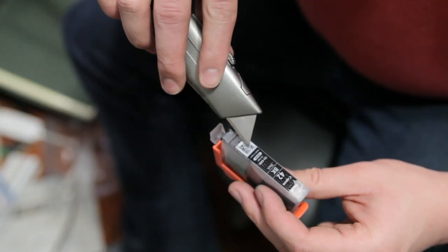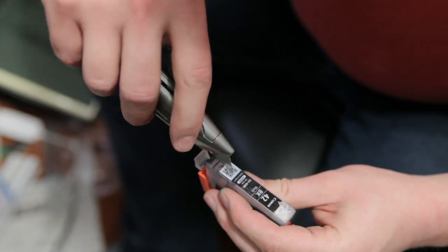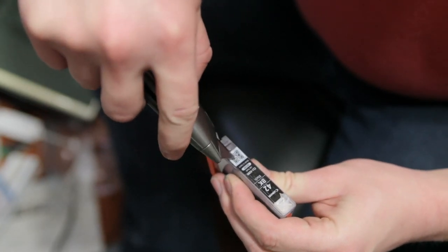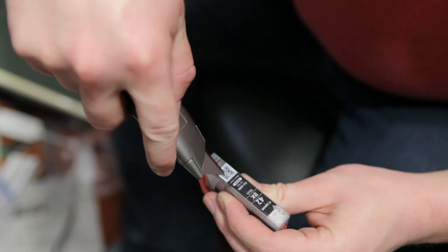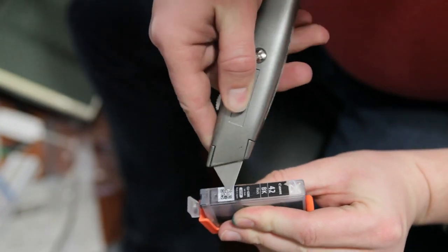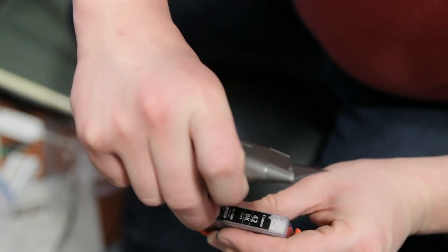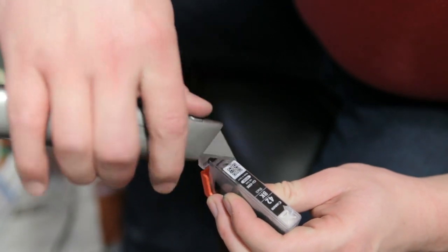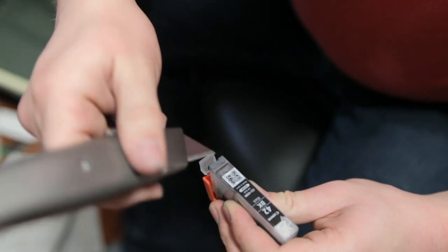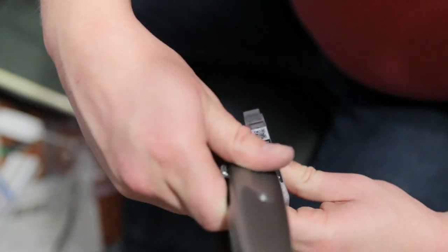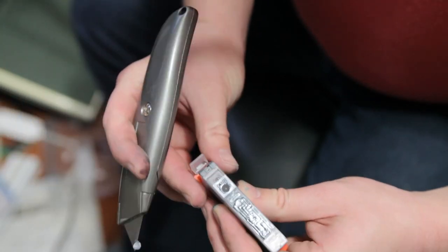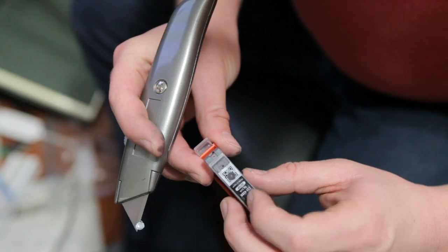Alright, so there's the ball valve right there. We're just going to take a sharp Xacto knife and just take the surface sticker off. Just remove that label. So now we have access to that ball valve in there.